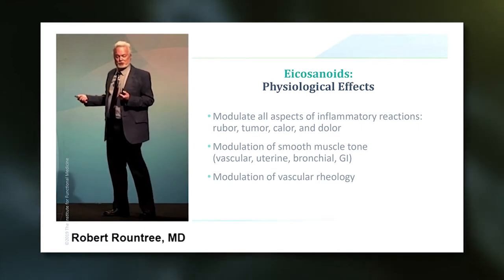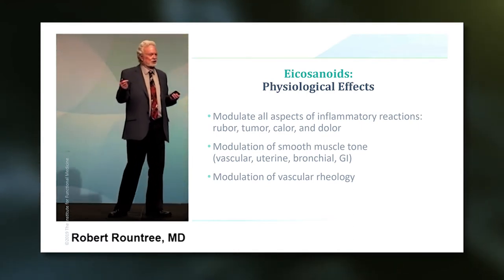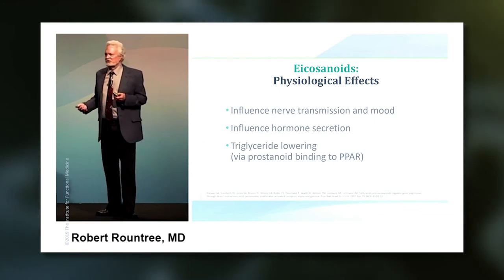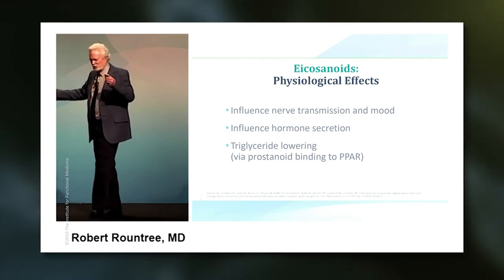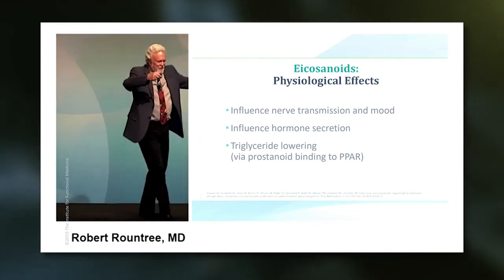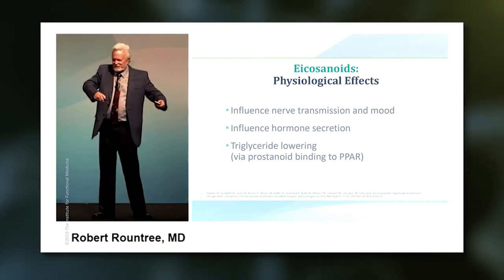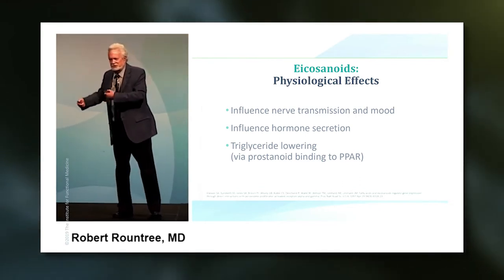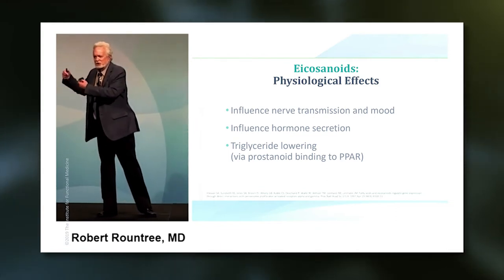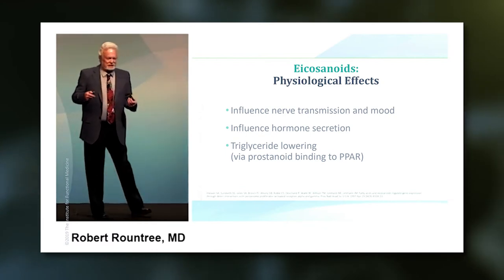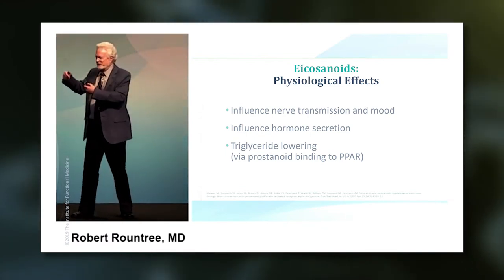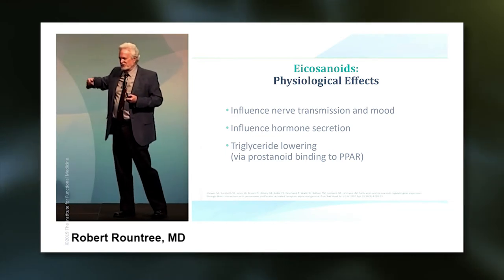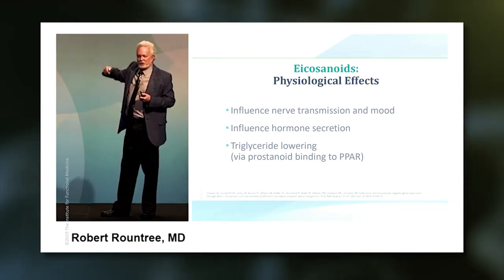Eicosanoids also modulate vascular rheology — in other words, they influence clotting tendencies. They also influence nerve transmission and mood. So we keep hearing this overlap between inflammation and mood. There's one theory that says mood disorders are caused by deficiencies or imbalances of neurotransmitters. But there's an emerging perspective that says bad moods are caused by inflammation, or disruptions in the inflammatory cascade — which takes you down a whole different pathway, or rather upstream in a whole different pathway.